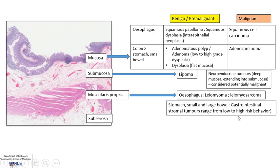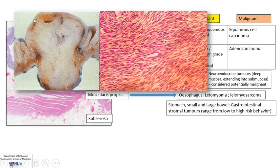We decide how aggressive a GIST is based on where it is — if it's in the stomach, it has a better prognosis. We also look at the size of the tumor and the mitotic counts. Based on these three features, we decide whether it is low risk or high risk, meaning risk of aggressive behavior such as recurrence or metastases. Grossly, a GIST is clearly not arising from the mucosa; rather, it arises in the wall of the gut, pushing up against the mucosa.